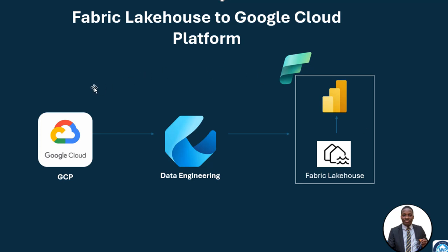We're going to go through this diagram. We'll start off by going to our Google Cloud — we can create a free trial account worth $300. And then we're going to move on to our data engineering workload in Fabric, create a lakehouse, and then build a Power BI report on top of that data coming from the GCP.